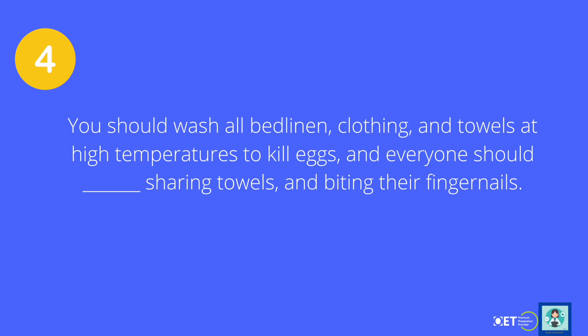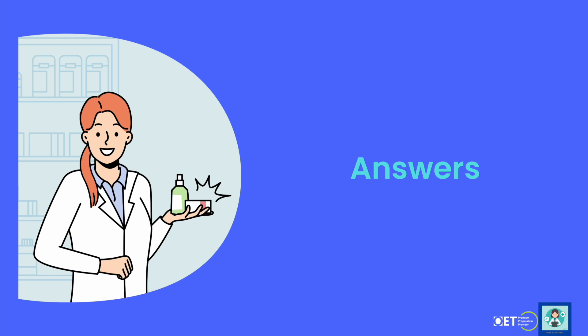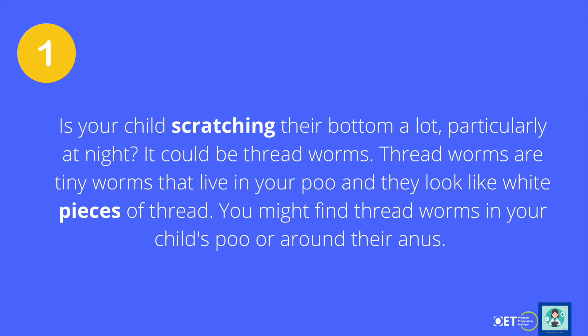Let's listen to the answers. The first gap is 'scratching their bottom a lot' and the second is 'they look like white pieces of thread.' Note that 'of' as a preposition has a very weak sound and runs together with the word before it — 'pieces of,' 'pieces of thread.'